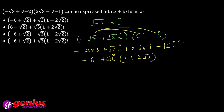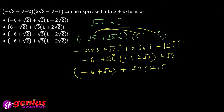The final answer for the complex number: collecting real and imaginary parts gives minus 6 plus real parts, and the imaginary part is root 3 plus 2 root 2 times iota. So real part is minus 6 and imaginary part involves root 3 and root 6 terms.